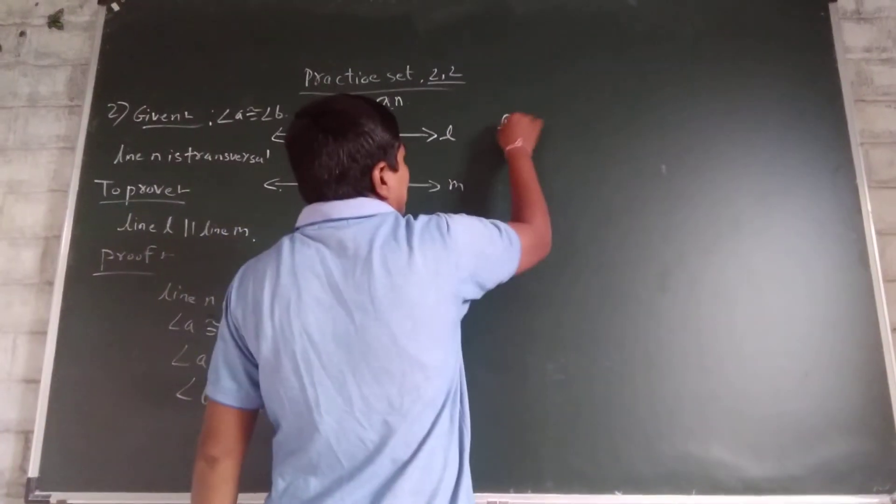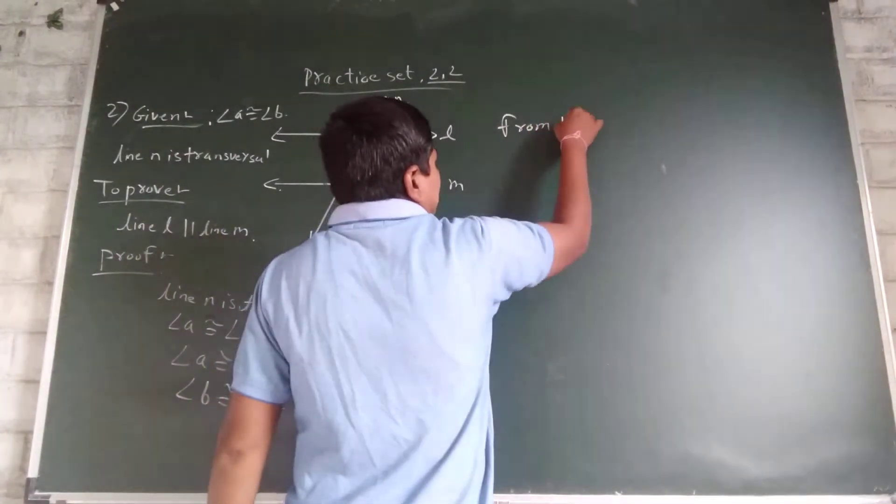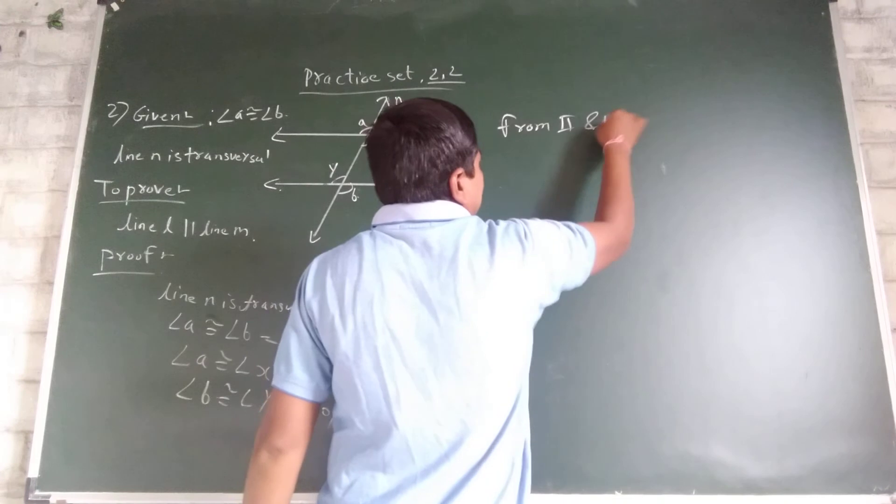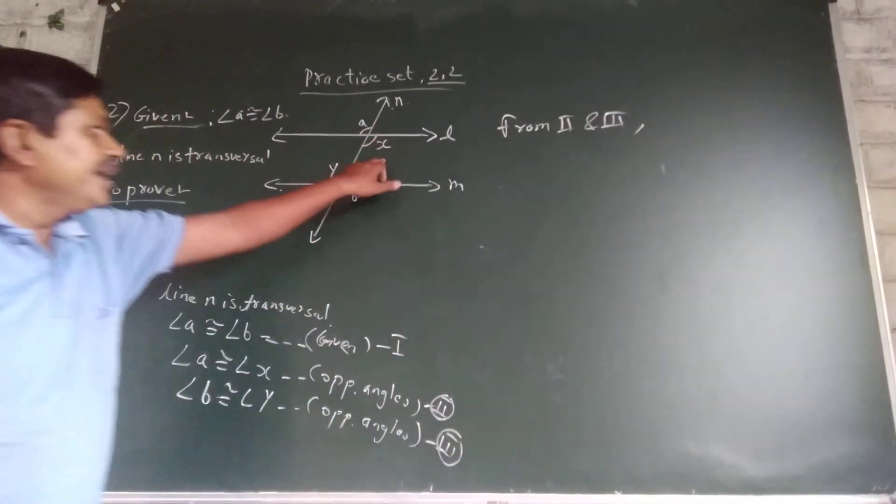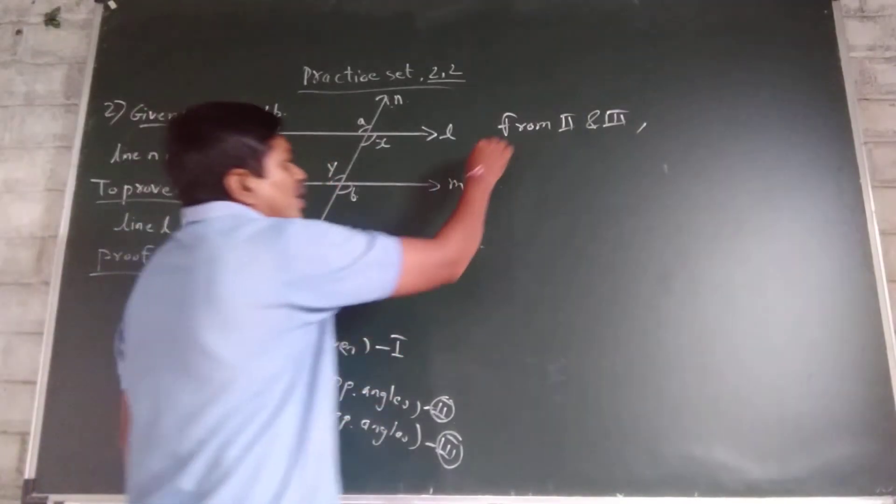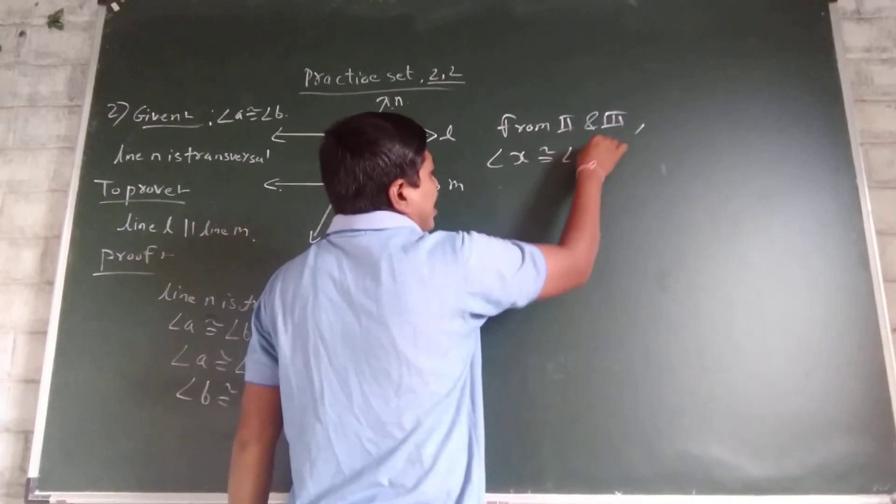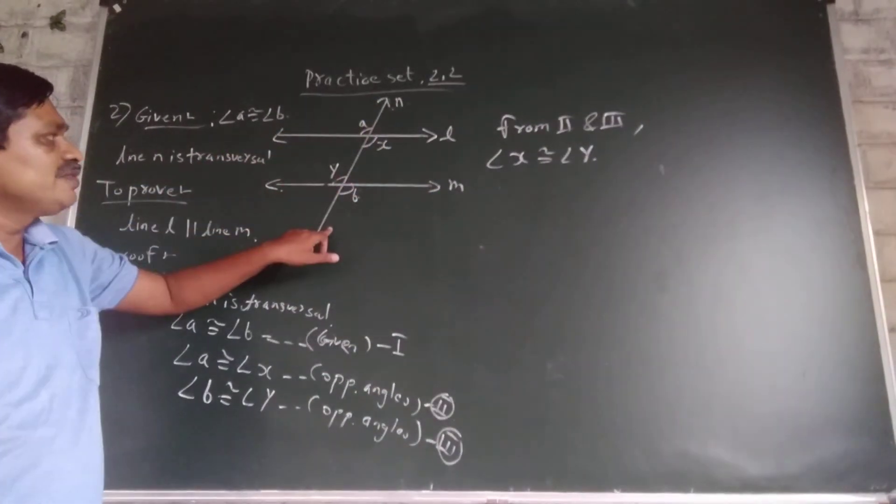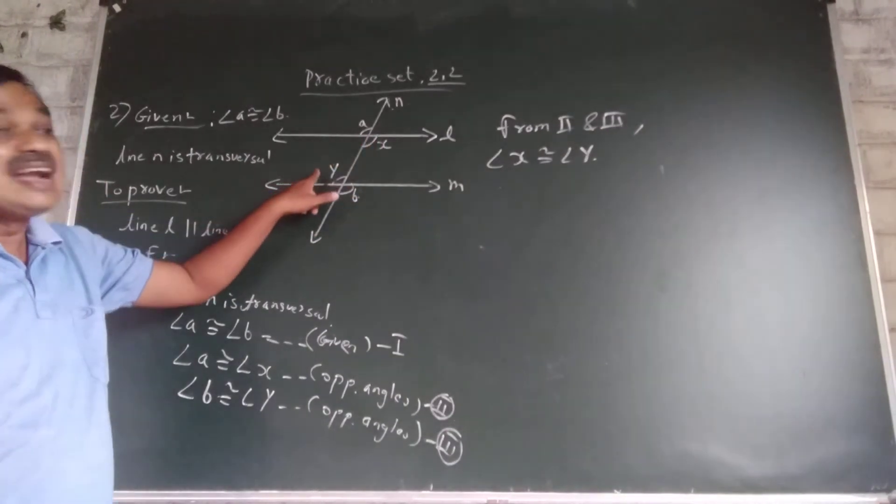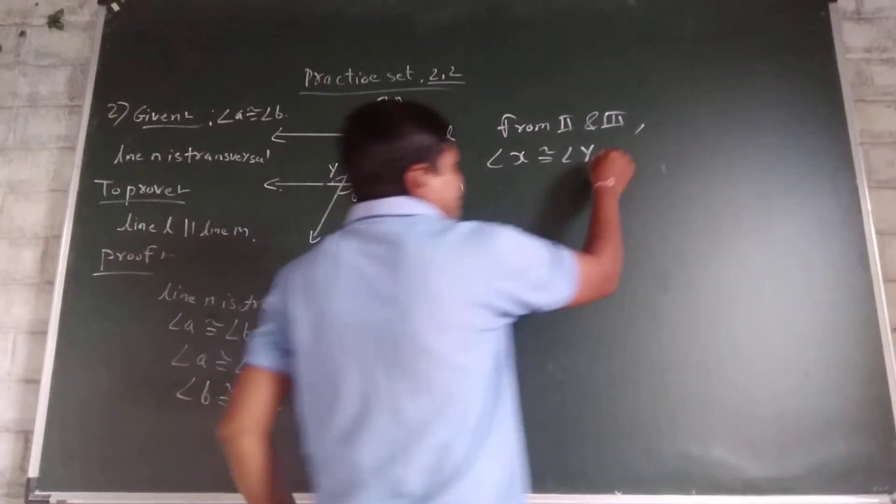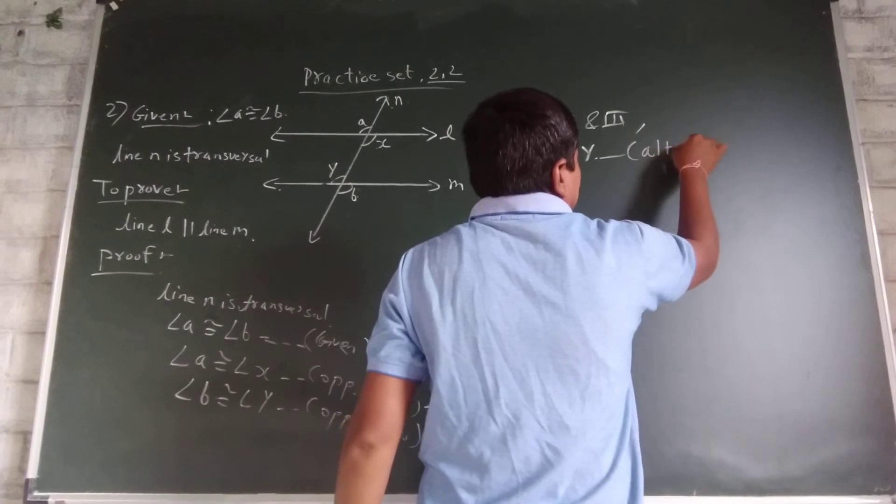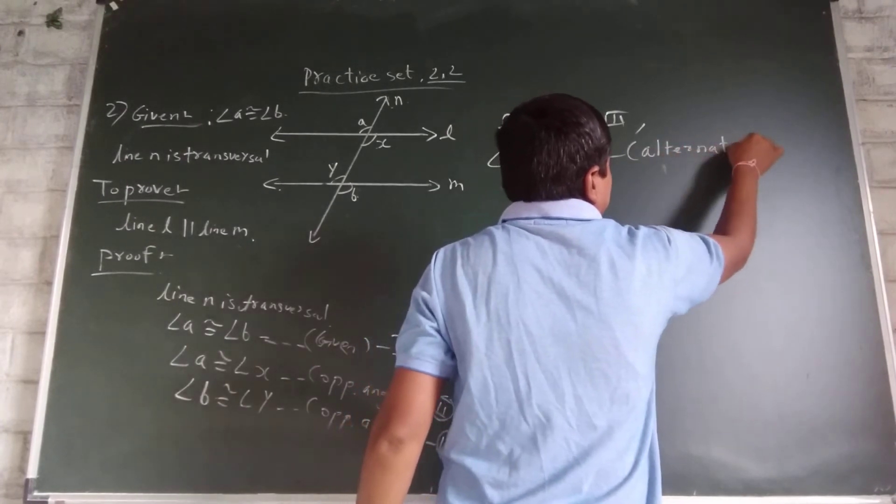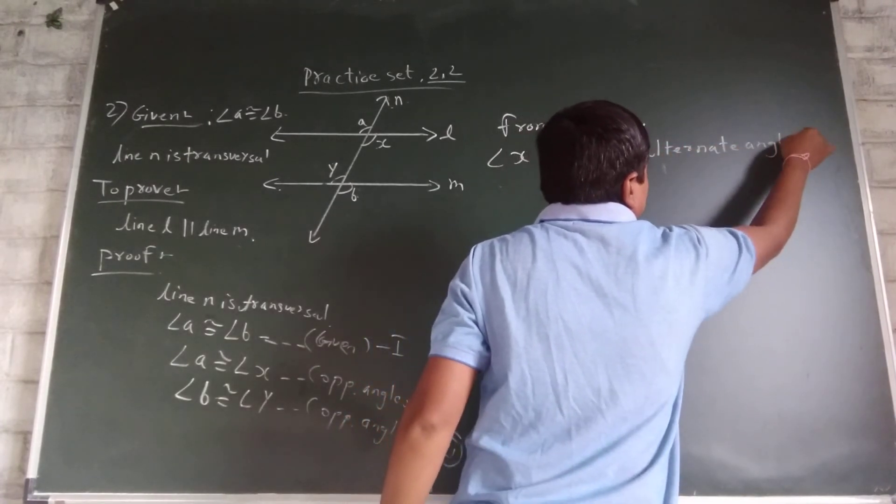From equation 2 and 3, angle X and Y are also congruent. These two angles are congruent and this is a transversal, so they are alternate angles.